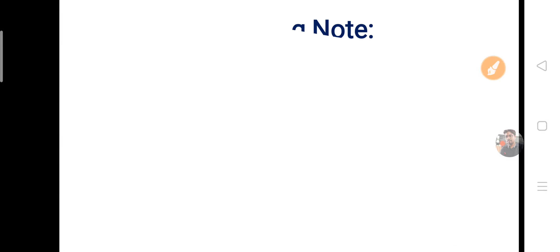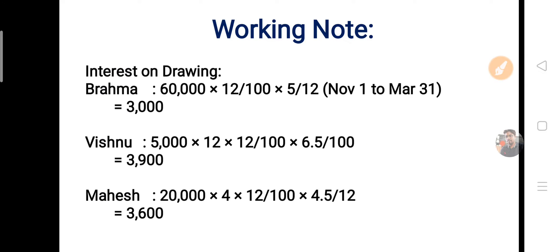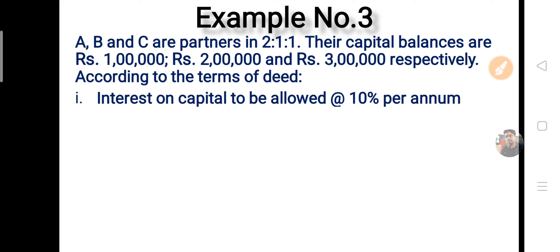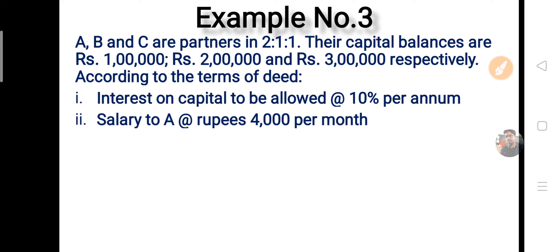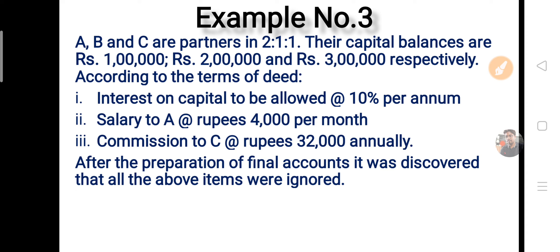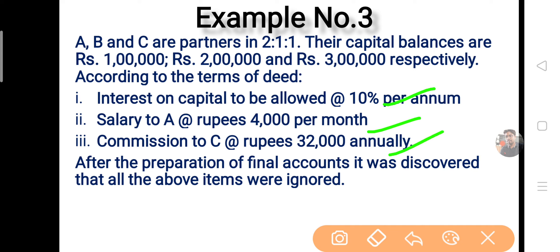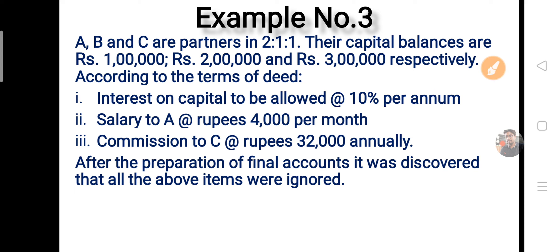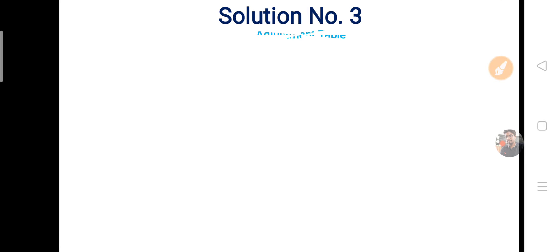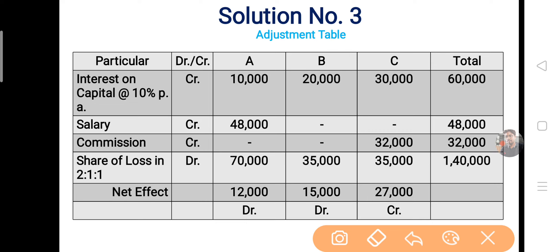Question 3: A, B and C are partners in 2:1:1 ratio। Capital balances: ₹1 lakh, ₹2 lakh, ₹3 lakh (no fixed capital mentioned)। According to deed: interest on capital at 10% p.a., salary to A ₹4,000 per month, commission to C ₹32,000 annually। After preparing final accounts it was discovered that all above items were ignored — यह case है omission of multiple items।